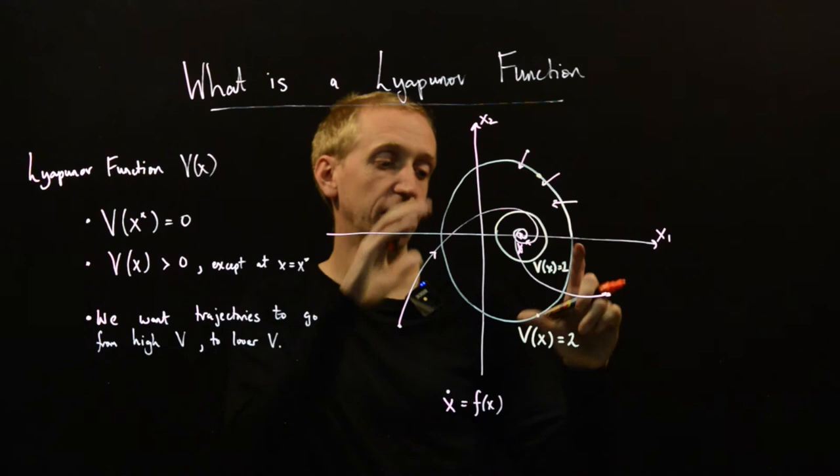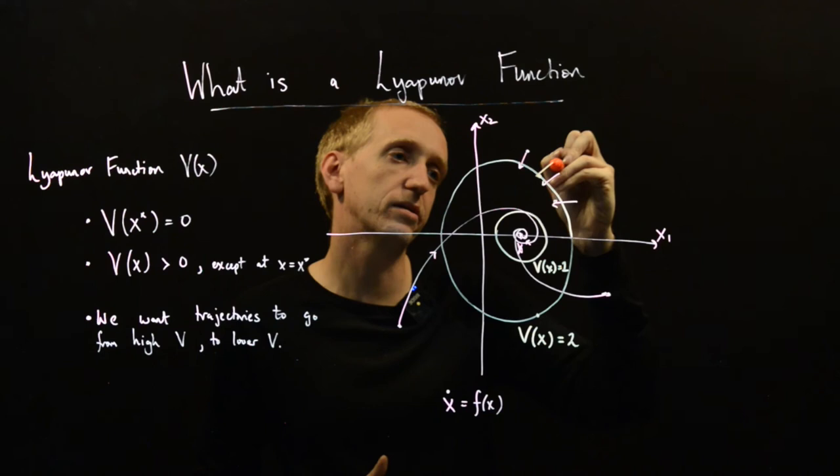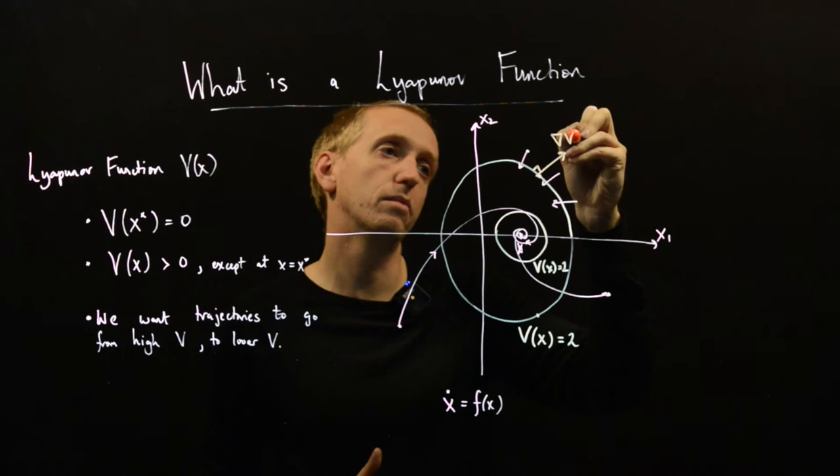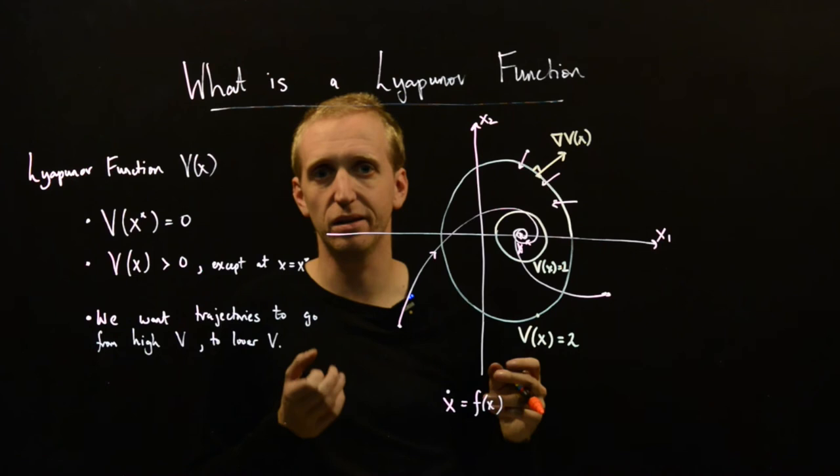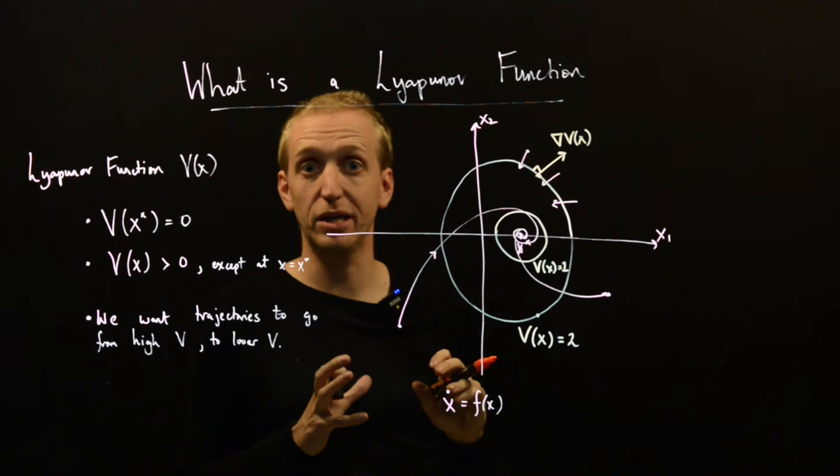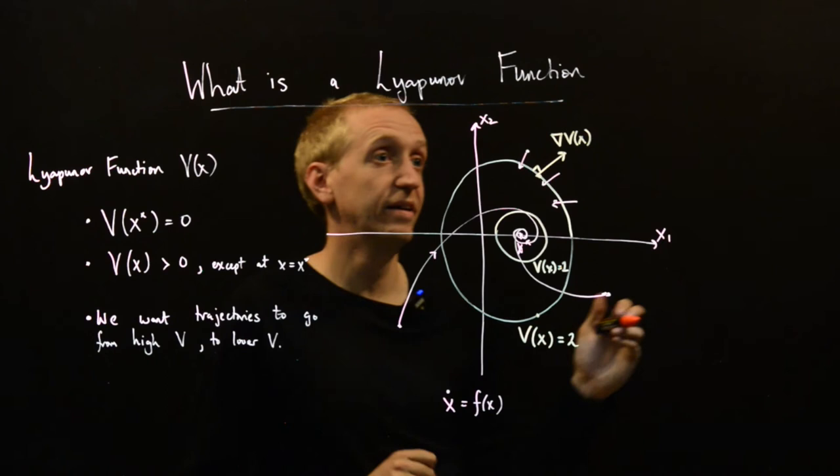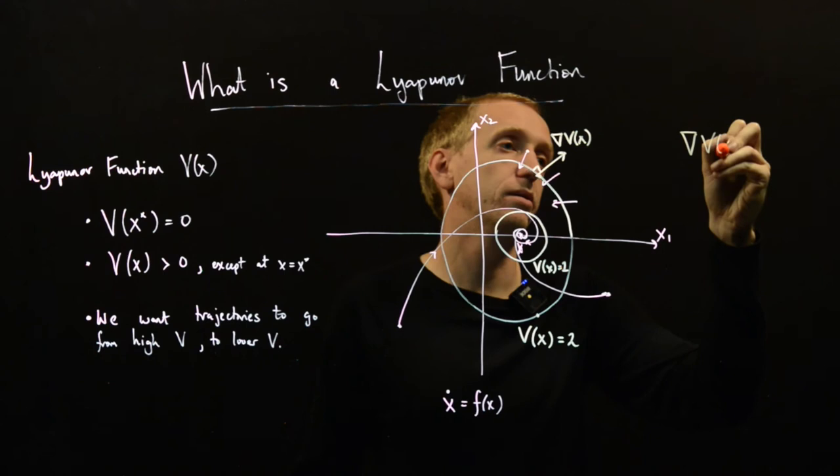So if this is the contour of v of x is equal to 2, then the gradient of v evaluated at that point will be pointing at right angles to this contour of constant v.